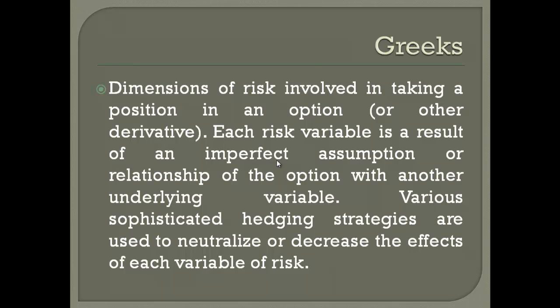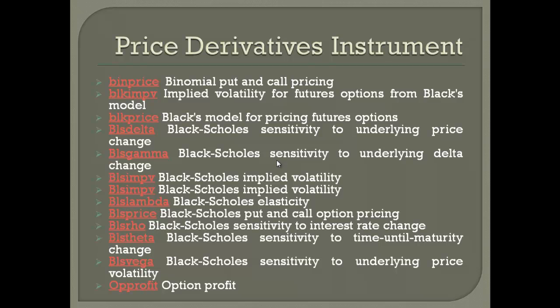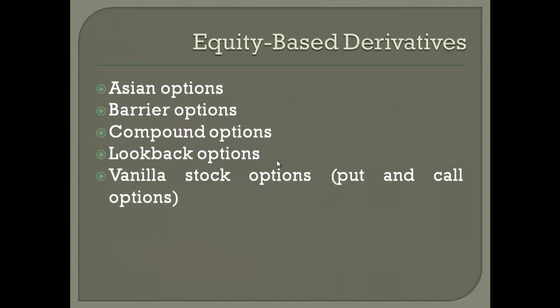Various Greeks are available for the sensitivities of put and call options — Delta, Gamma, Vega, and all the Greeks we have for equity options. MATLAB gives you the option to compute these using Black-Scholes, which is simpler and intuitive. We have Black-Scholes implied volatility, elasticity, put and call option pricing, sensitivity to interest rate (Rho), sensitivity to time (Theta), and sensitivity to the underlying price (Delta/Vega). All these functions are accessible by clicking the relevant links.